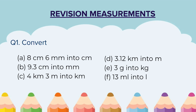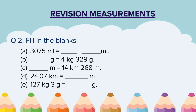Now, the next question is based on fill in the blanks. This is the same conversion question, just in fill in the blank form. 3075 milliliters is equal to dash liters dash milliliters. Dash grams is equal to 4 kg 329 grams. Dash meters is equal to 14 kilometers 268 meters. 24.07 kilometers is equal to dash meters. 127 kg 3 grams is equal to dash grams. Please pause, solve this question and then unpause and continue.